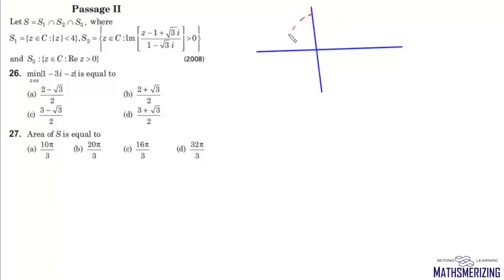This is your S1, consisting of all the points with center at origin and radius equals 4 units. Now S3 is the set of all points in which the real part is greater than zero. That means all the points inside this circle which lie on the first quadrant or fourth quadrant.